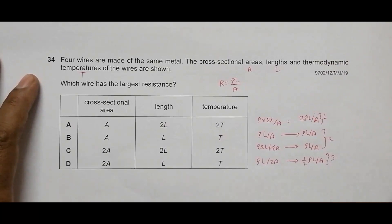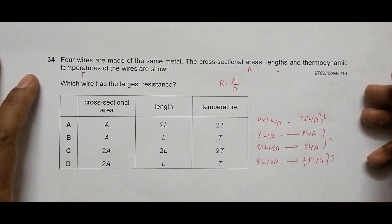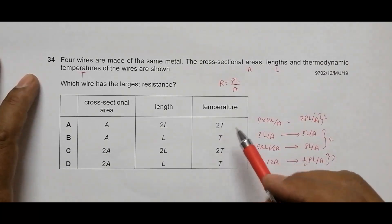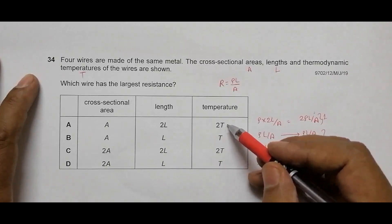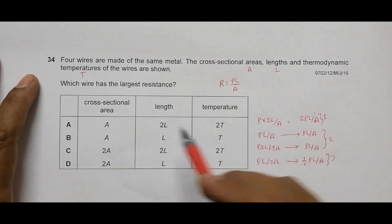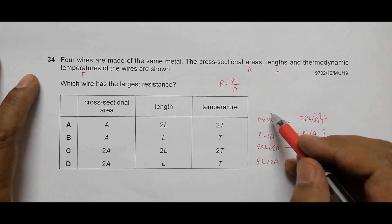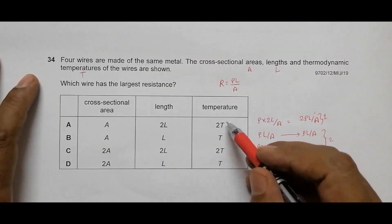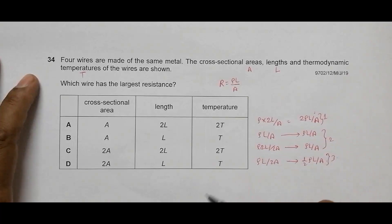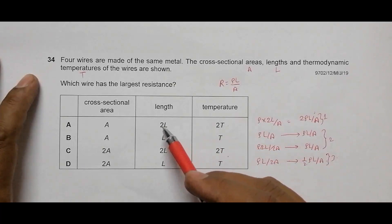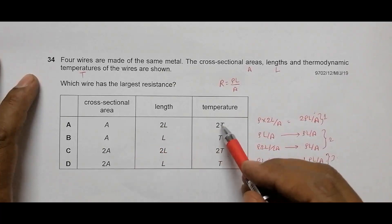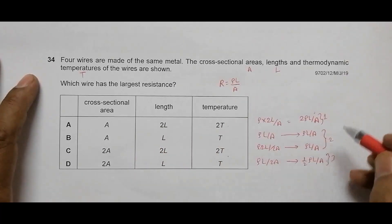Now, another factor given here is the temperature. Since the temperature here is less and temperature here is more, the resistance will be more. So based on two criteria—one according to the formula and another according to temperature—B and C should be equal, but considering ρ, L, and A, wire A will be greater. So wire A should have the largest resistance, and choice A should be the correct choice.